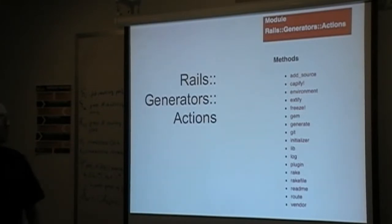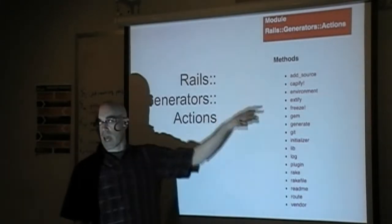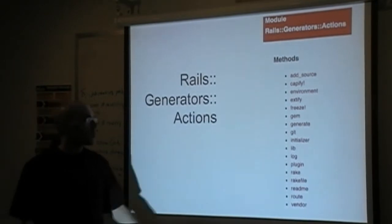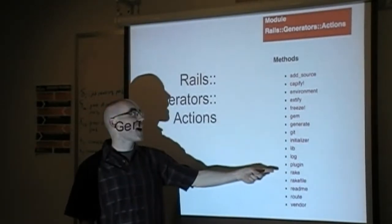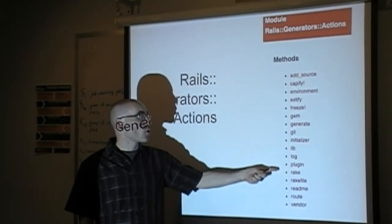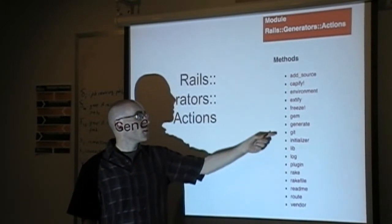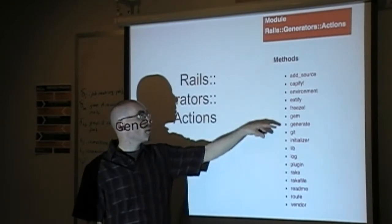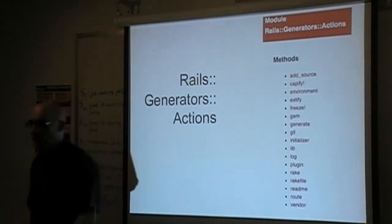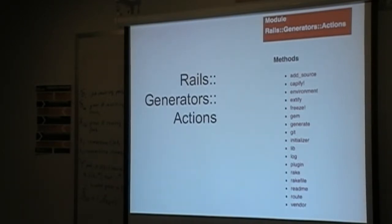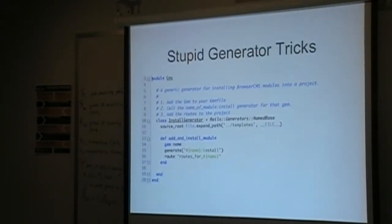Layered on top of Thor actions are the Rails generator actions. This is a snapshot from the actual API documentation. It adds things like 'invoke a rake task,' 'invoke a git' — git init or add — run Capistrano on your project. So stuff that's very specific to Rails projects. All generators have access to these automatically.